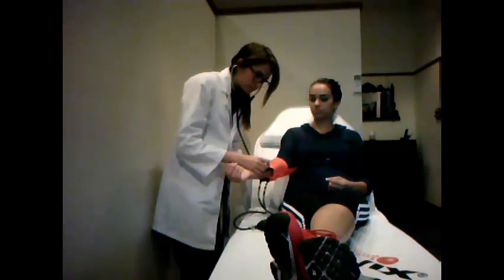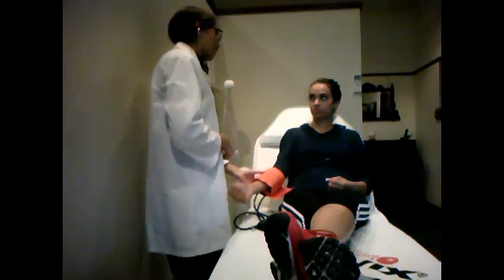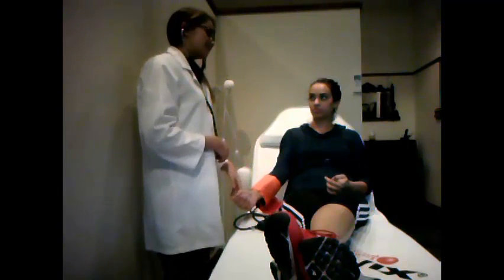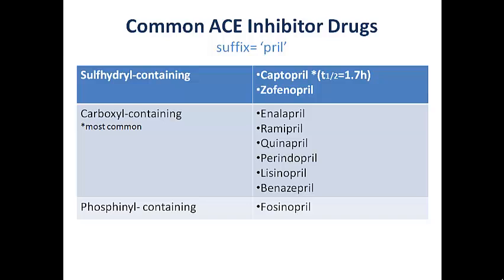It's about 150 over 110 — that's quite high. I'm going to have to put you on an ACE inhibitor. ACE inhibitors are one of the most frequently used classes of antihypertensive drugs. They have several additional clinical indications, including cardiovascular disease, as well as diabetic and non-diabetic renal neuropathies. There are a number of different ACE inhibitors currently available on the market.